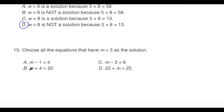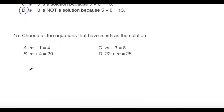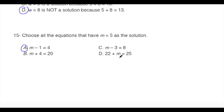Last question: choose all equations that have m equals 5 as the solution. If m equals 5: first equation gives 5 minus 1 equals 4 — correct. Second gives 5 plus 4 equals 9, not 20. Third gives 5 minus 3 equals 2, not 8. Fourth gives 22 plus 5 equals 27, not 25. So the answer is A. Thanks everyone and best wishes.